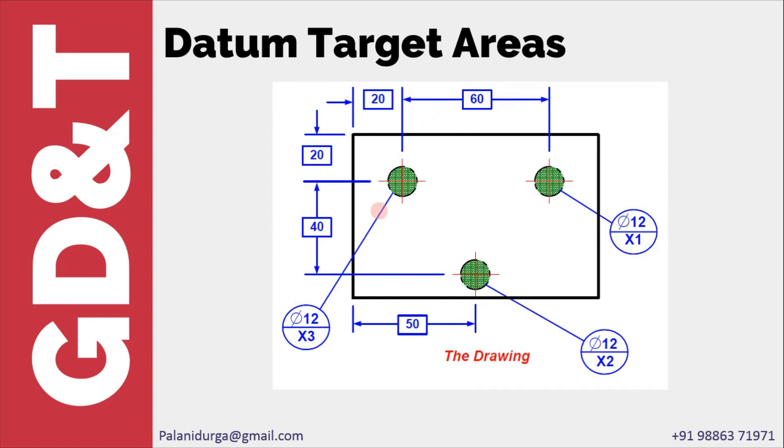The third one is datum target areas. This is how we represent datum target area. You have to have a phantom line for the area size and then it should be hatched. The area can be any shape: circle, square, or rectangle, depending upon the space availability on the component. The location of the area can be directly given with the basic dimension, and the diameter or the size of the target area would be given in the datum target identification symbol. In this example we have taken the same diameter of 12 for all three.